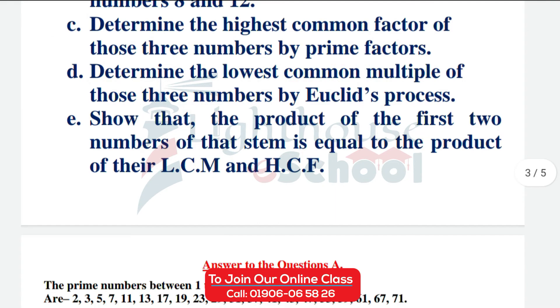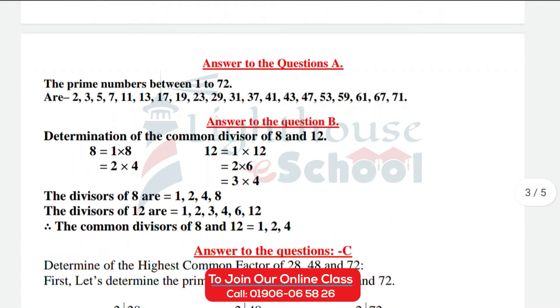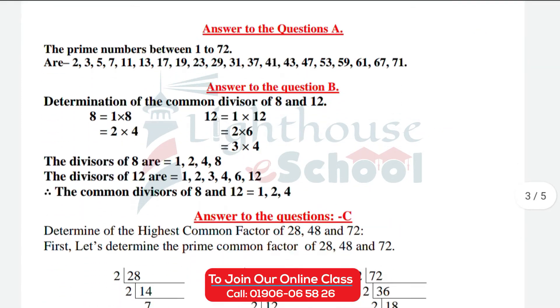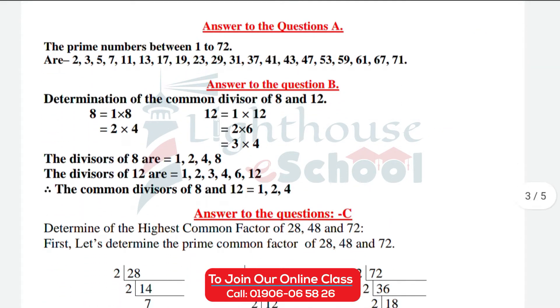So let's start with this video. Let's look at the answer to question number 1. The prime numbers between 1 and 72 — these are numbers that can only be divided by 1 and themselves.